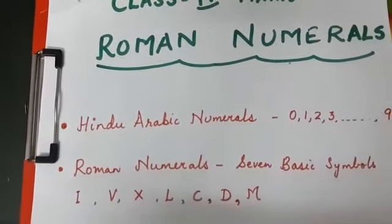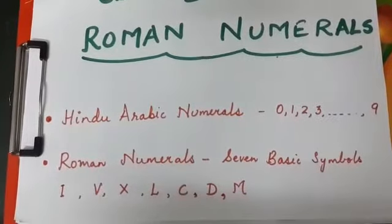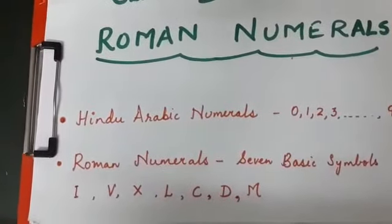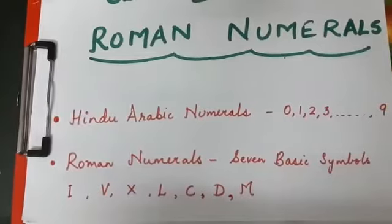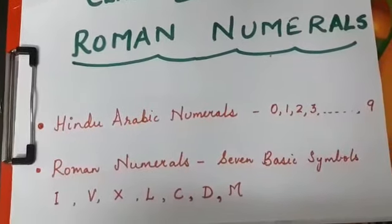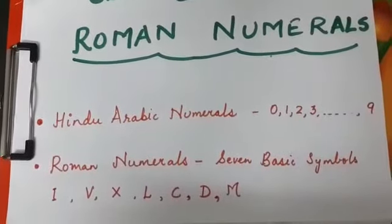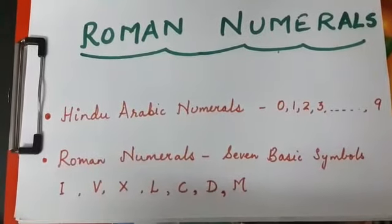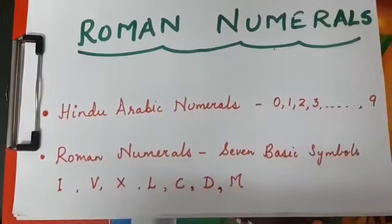Now it's very interesting to see that by using only these seven symbols, any counting numbers can be written. That I will be discussing later on. But there are some rules for it.